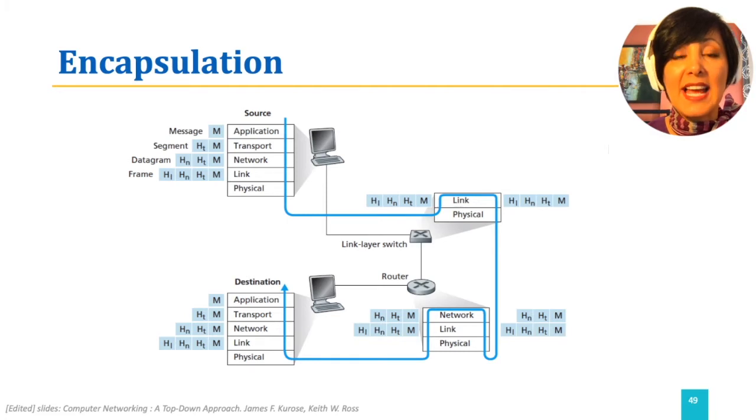A packet has in general two parts: a header that contains the control information and a payload that typically contains a packet from the layer above.